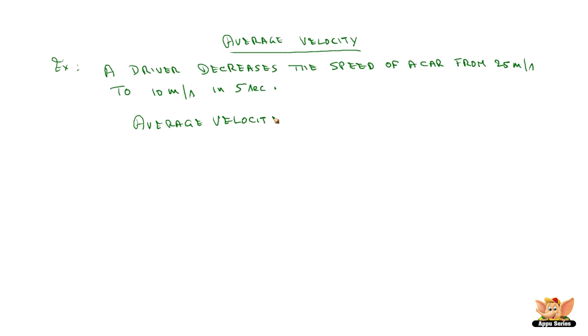Average velocity v bar equals initial velocity u plus final velocity v by 2. Here u is 25 meter per second and v is 10 meter per second.